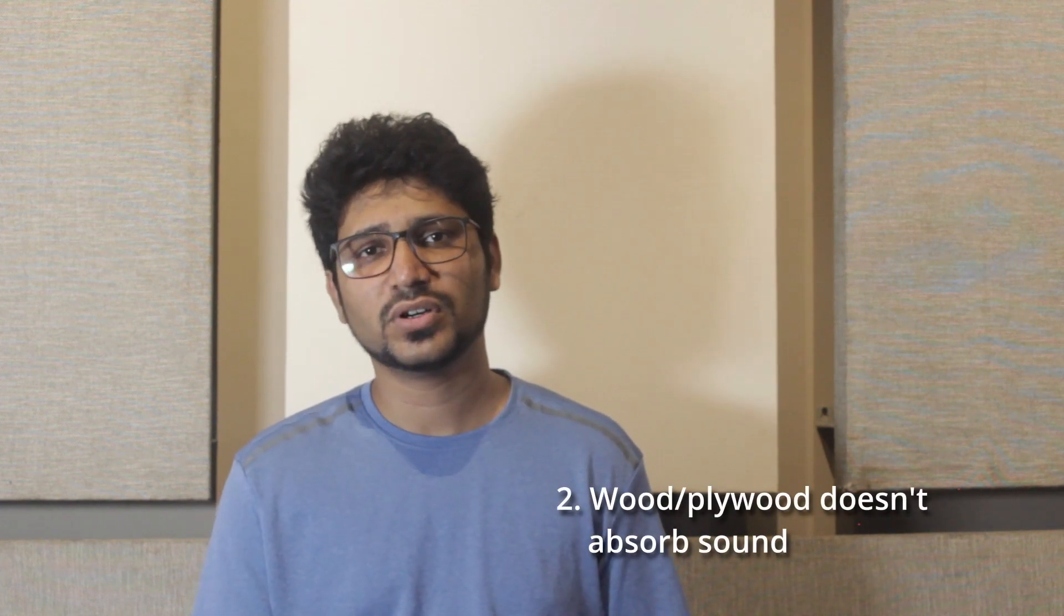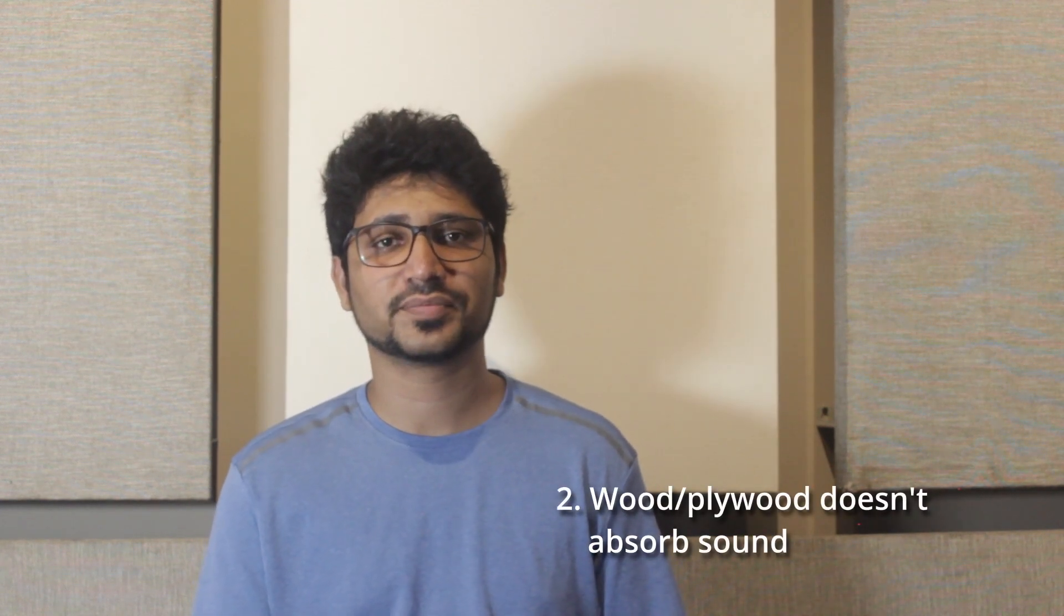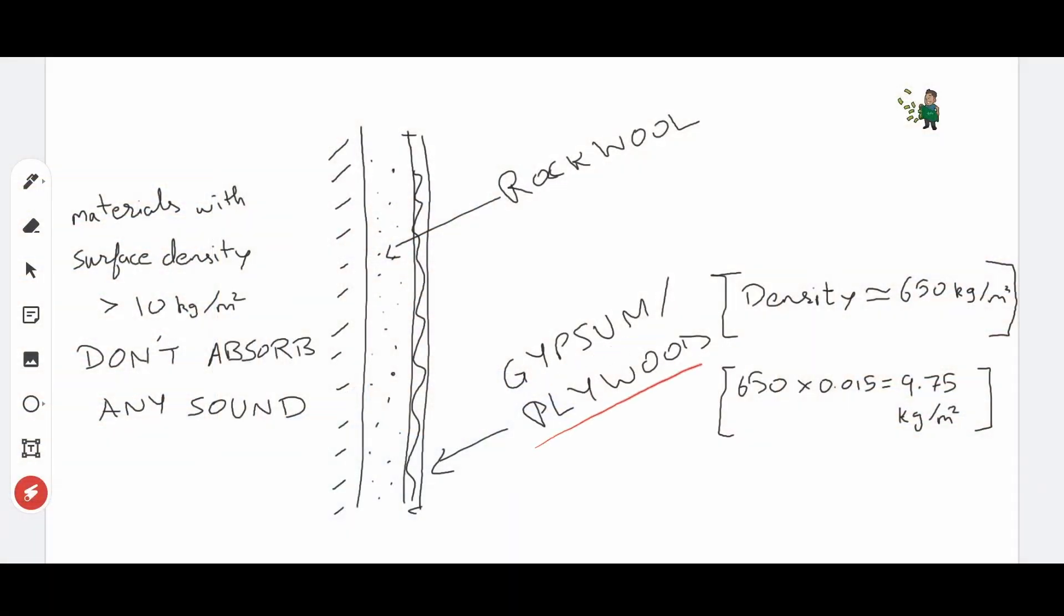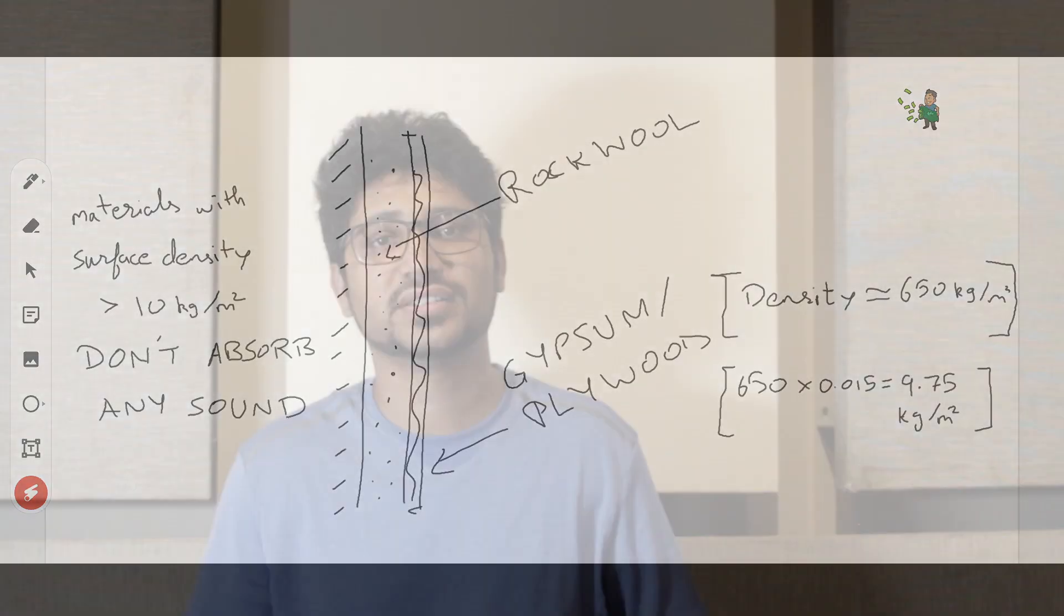Secondly, confusing wood or plywood as an absorbing material. We have seen people put gypsum boards or quarter-inch plywood boards over two inches of rock wool and then apply a fabric over it to add some aesthetic value and call it an absorbing panel.